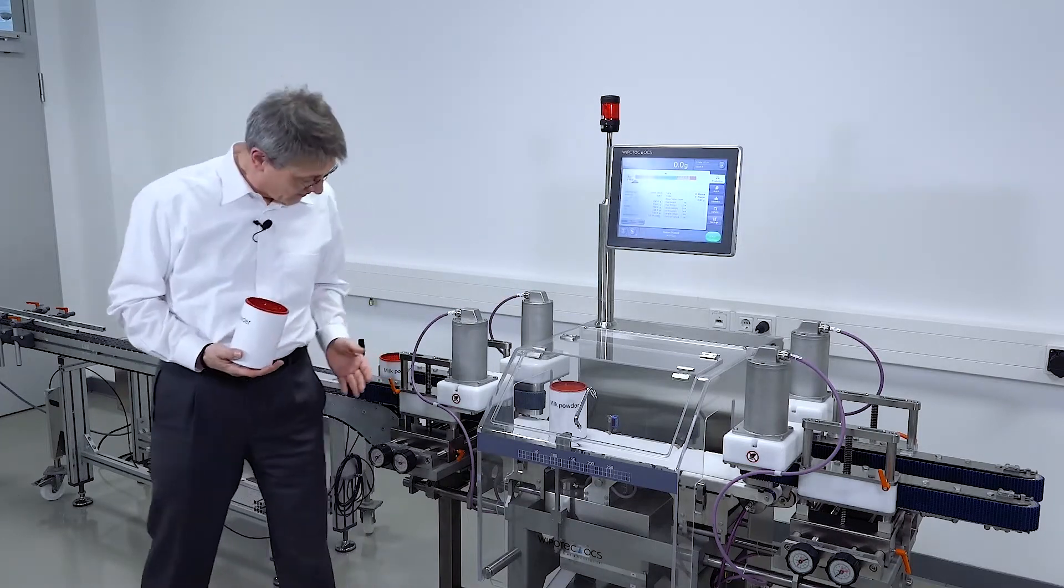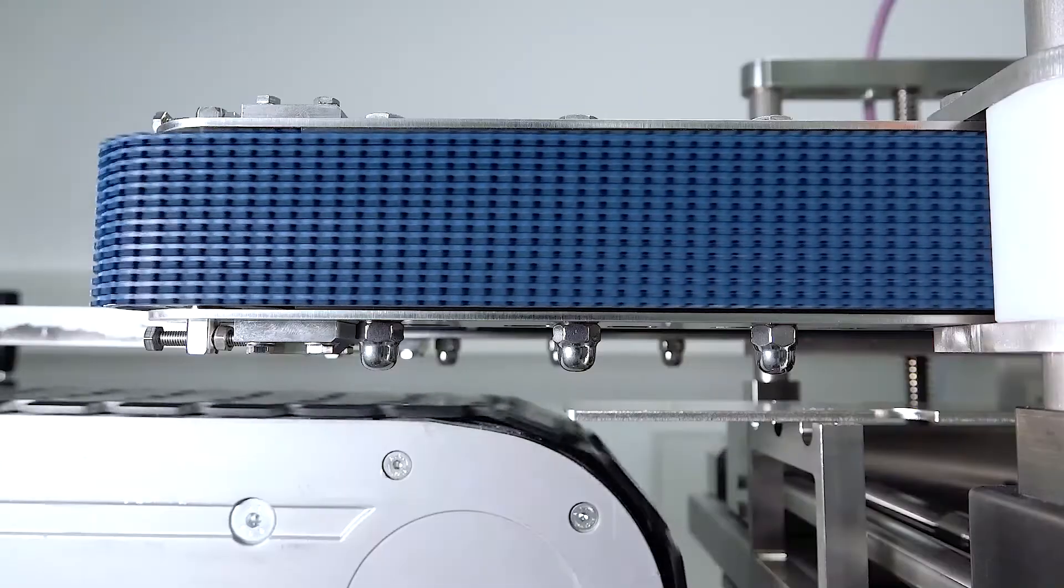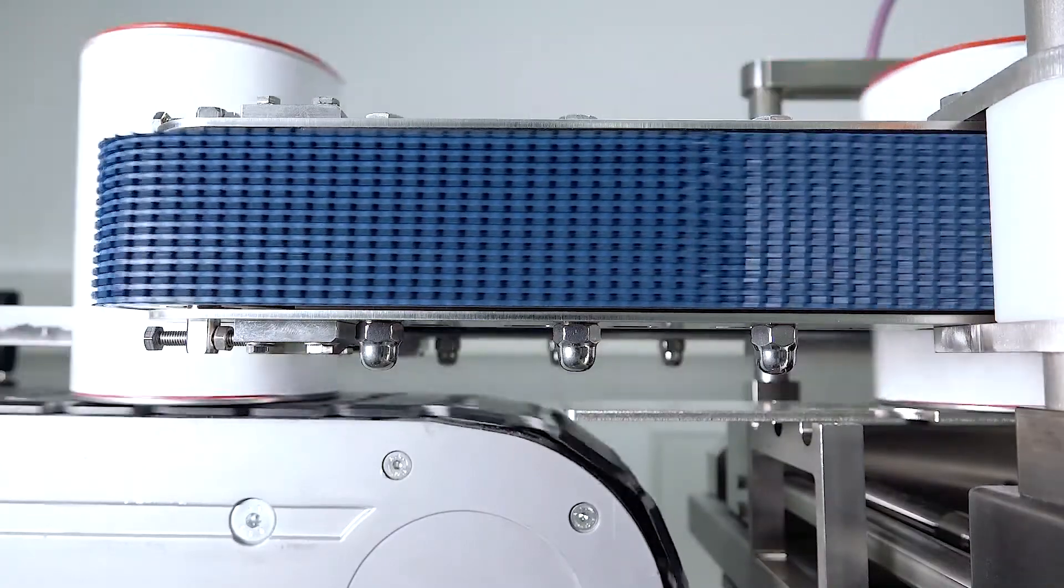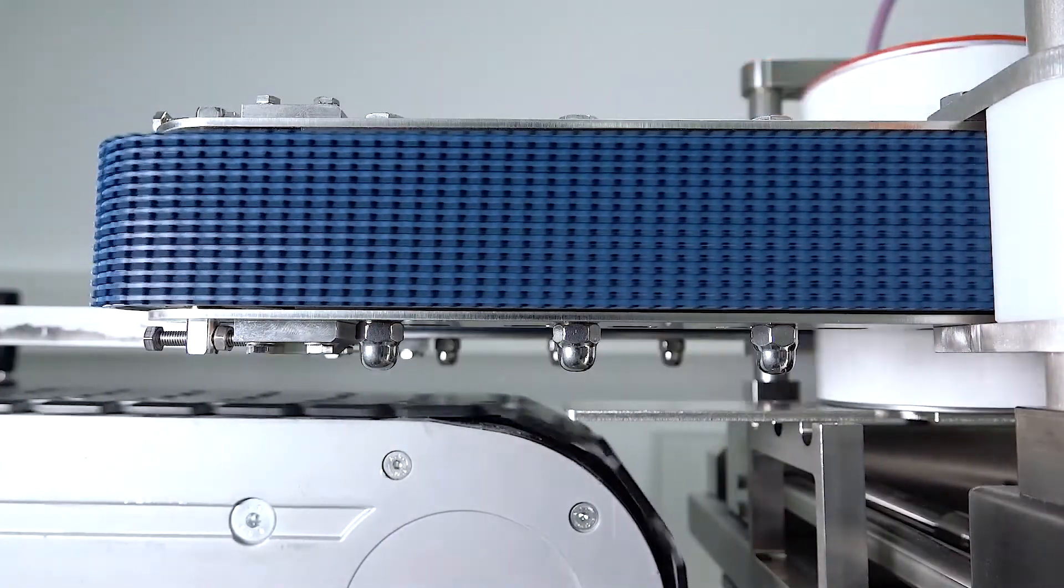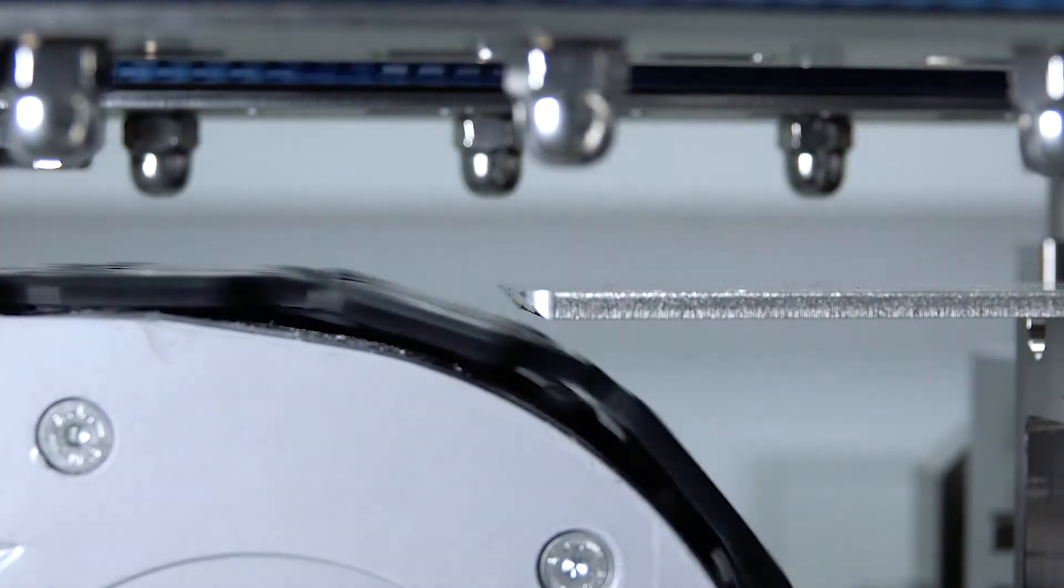Chain conveyors normally have very big rollers. That means we need special conditions and special equipment to take over the products from the chain conveyor into the checkweigher.